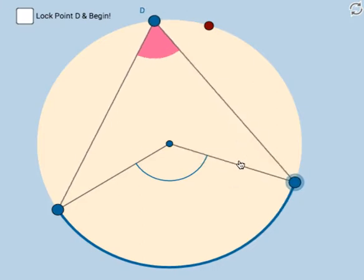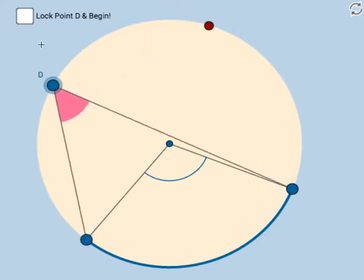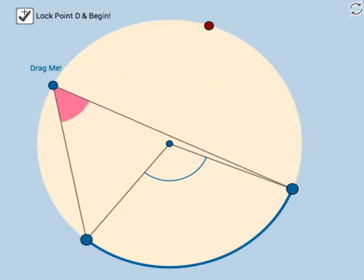So, I'll tell you what. Get the diagram to look just the way you want it. And what we're going to do is actually, once you get it just the way you want it, hit lock point D and begin. So, let's lock it in there.